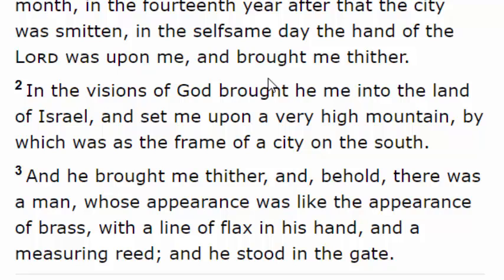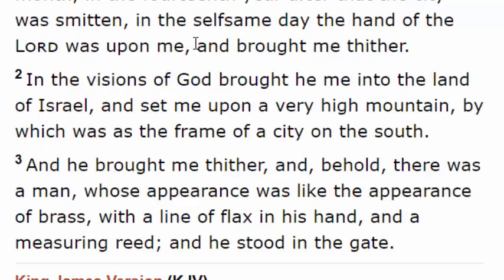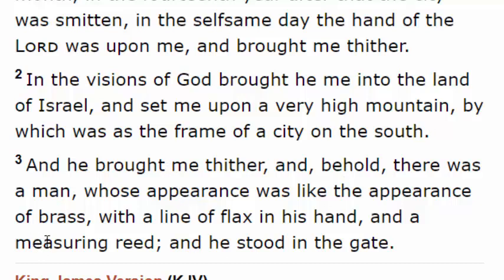Looking at verse 3: 'And he brought me thither, and behold, there was a man whose appearance was like the appearance of brass, with a line of flax in his hand, and a measuring reed, and he stood in the gate.' When I read this preparing for this class, Revelation chapter 11 verse 1 came to mind: 'And there was given me a reed like unto a rod, and the angel stood, saying, Rise and measure the temple of God, and the altar, and them that worship therein.' That's the same thing Ezekiel was talking about — a measuring reed. In fact, if you go on in chapter 40, it's all about measuring the temple and the court. I don't know if that's related, but it's definitely interesting and gives us something to think about.